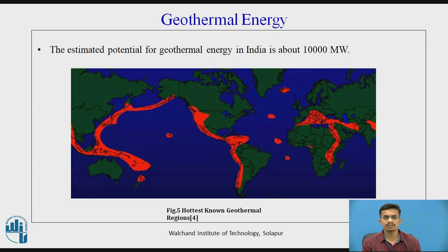The estimated potential of geothermal energy in India is about 10,000 MW. The figure shows the hot spots known for geothermal regions. We can see the red marks along the coastal areas of Australia, New Zealand, Japan, the west coast of America, Chile, and Mexico. This region is known as the Ring of Fire.